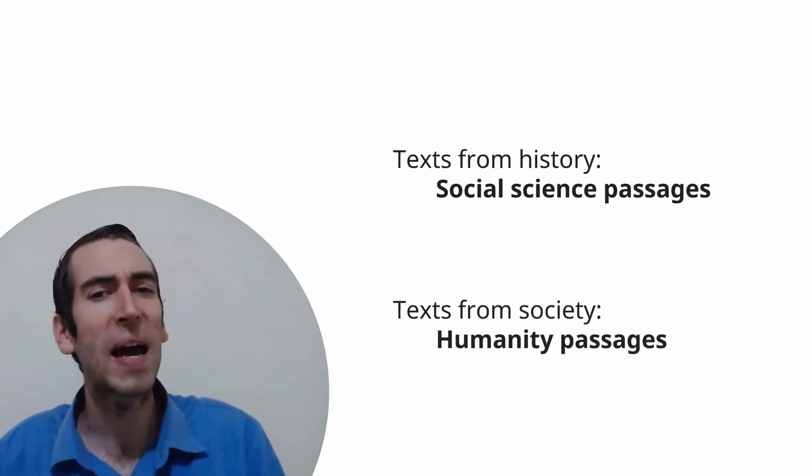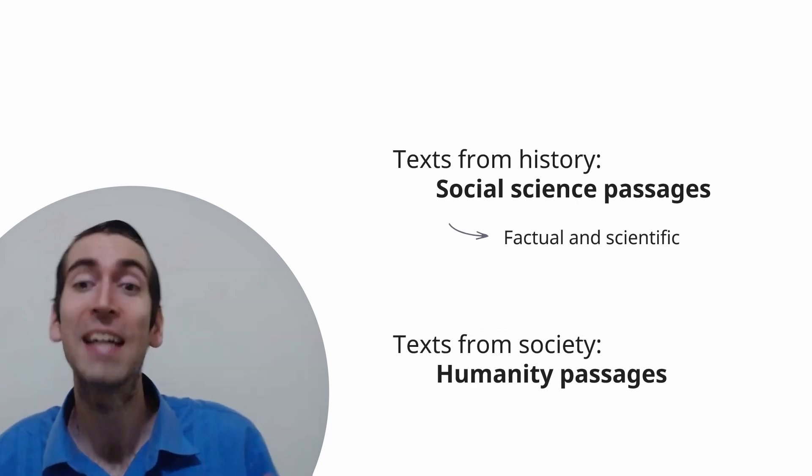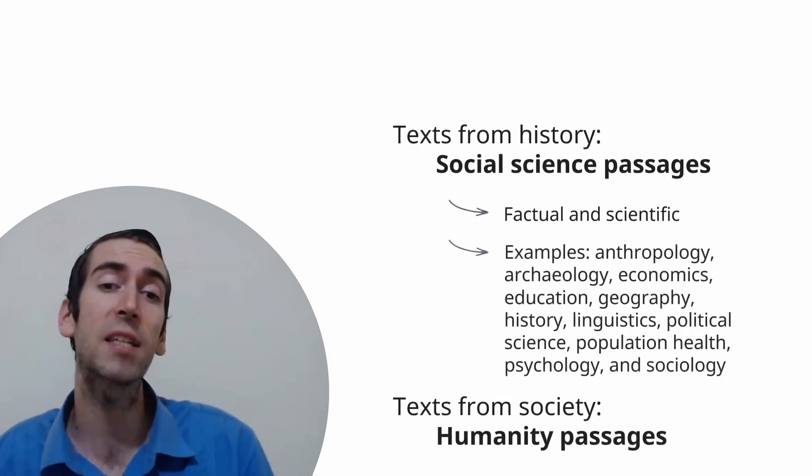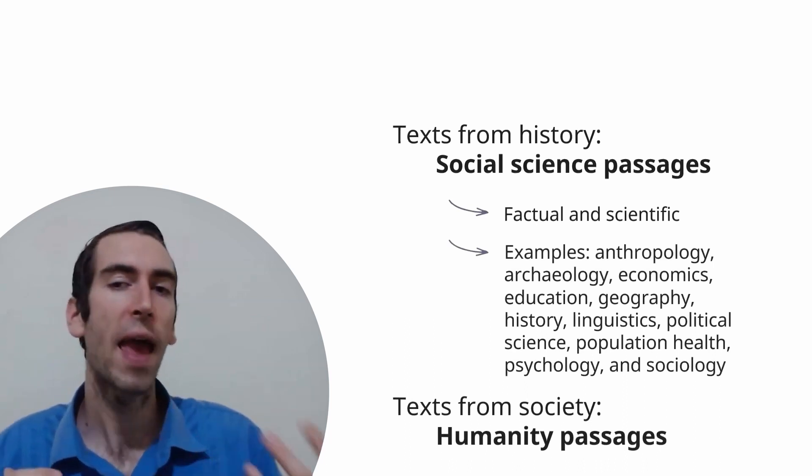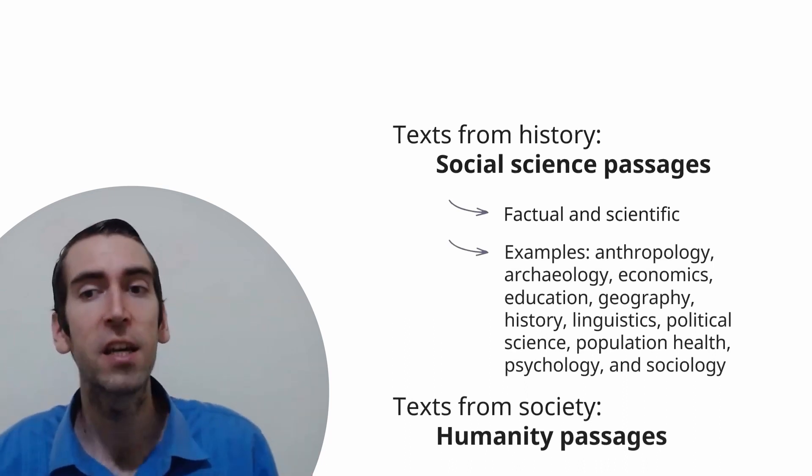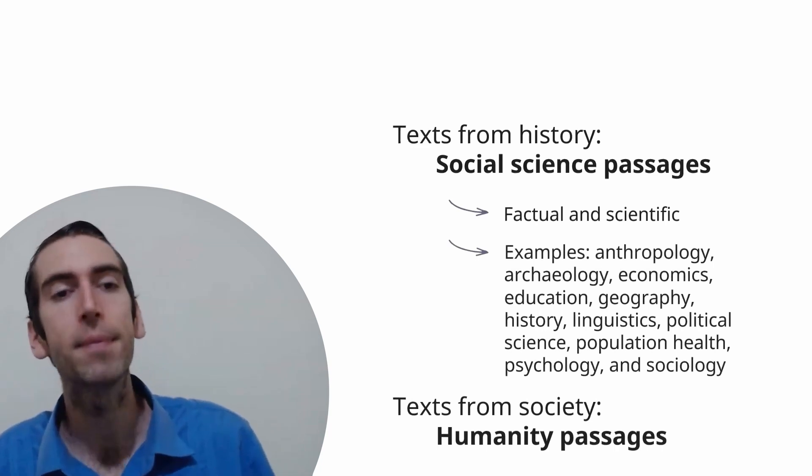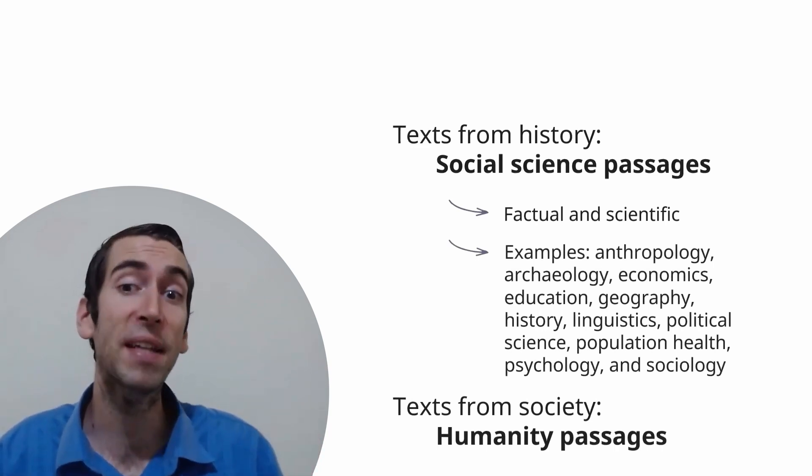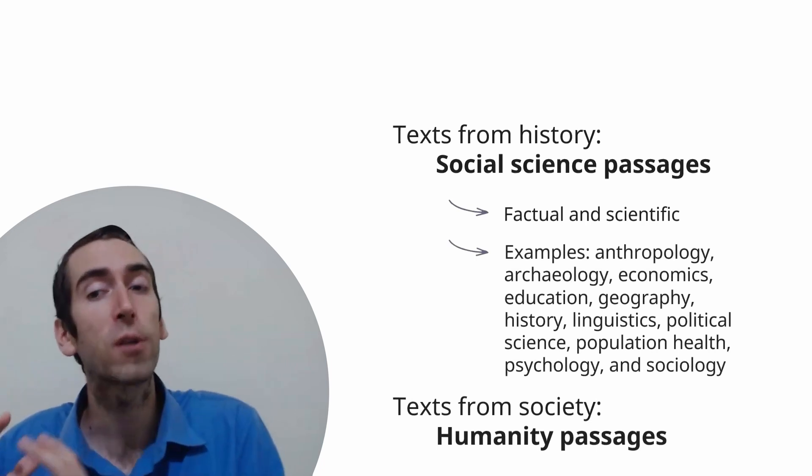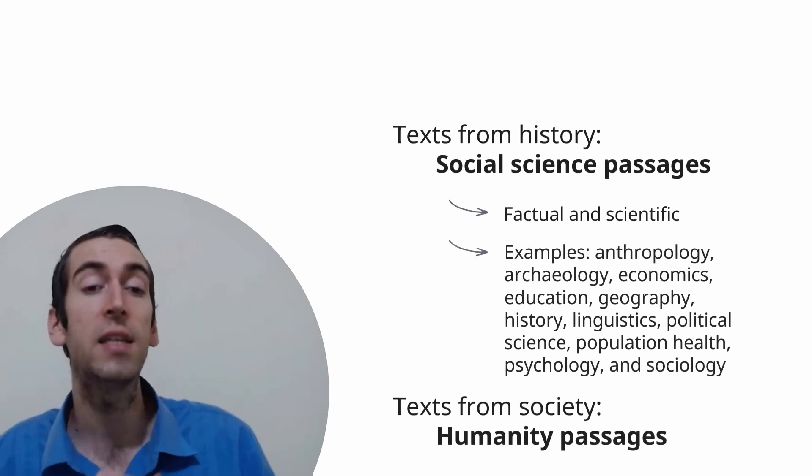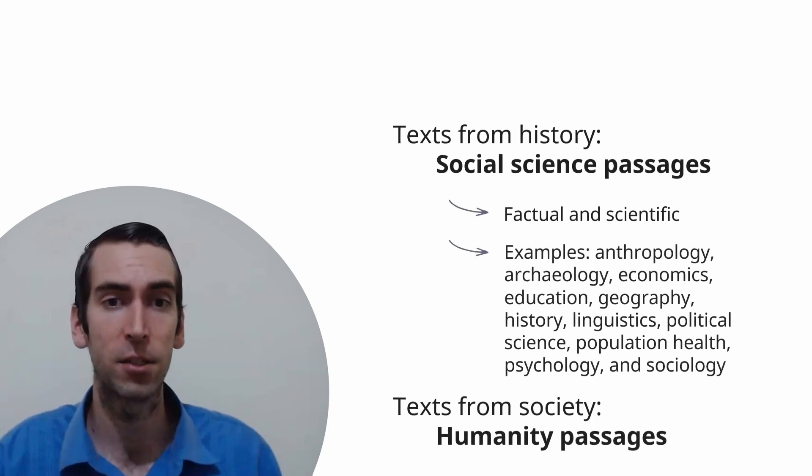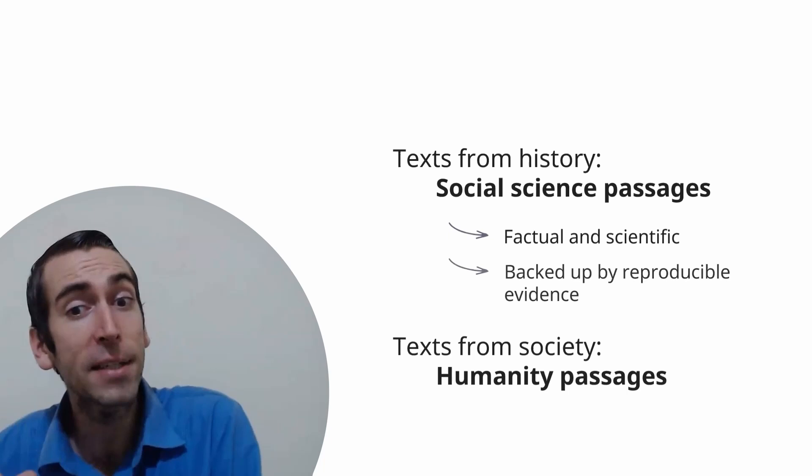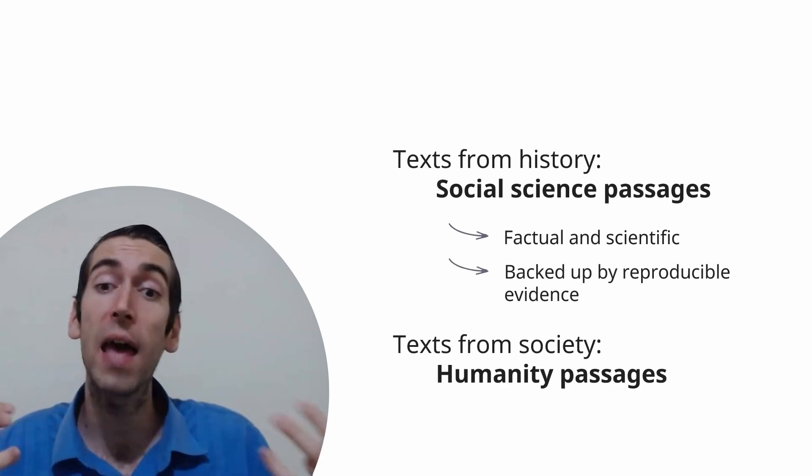Social science passages are more factual and scientific in nature. If you are given a CARS passage that discusses anthropology, archaeology, economics, education, geography, history, obviously, linguistics, political science, population health, psychology, or sociology, it is a social science passage. These topics are amenable to demanding that the findings are backed up by reproducible evidence.